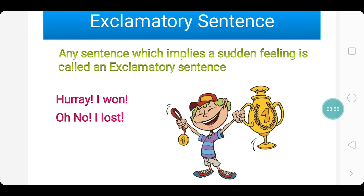Exclamatory sentence. Any sentence which implies a sudden feeling is called an exclamatory sentence. The sudden feeling may be happiness or sadness. For example: hooray, I won — this implies happiness. Oh no, I lost — this implies sadness. Any sudden feeling expressed in a sentence is called an exclamatory sentence.